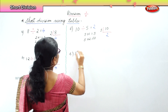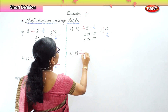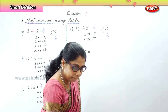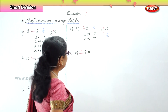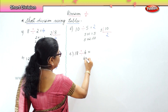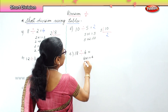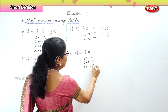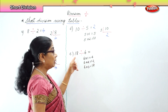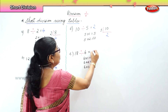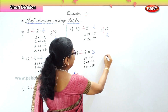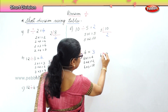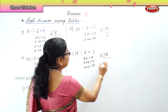Next sum: eighteen divided by six. We must know our six times table: six ones are six, six twos are twelve, six threes are eighteen. So six goes three times into eighteen — the answer is three. In short division, eighteen divided by six: six goes into eighteen three times.